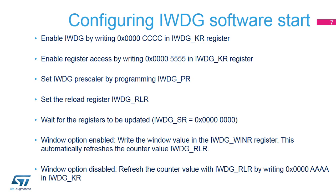The IWDG software start is configured in a few steps. The first step is to write the key register with value 0x0000CCCC, which starts the watchdog. Then remove IWDG register protection by writing 0x00005555 to unlock the key.